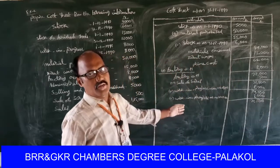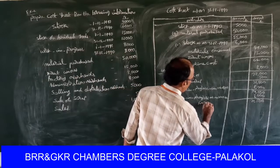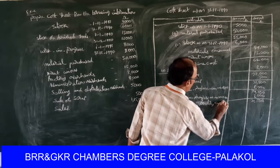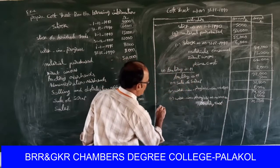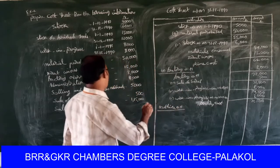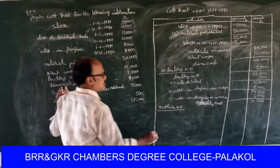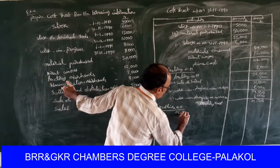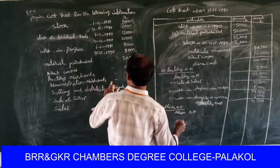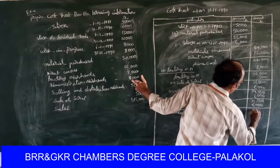This seventy-one thousand five hundred is to be treated as factory cost. Next, office overheads. Administrative overheads is nothing but office overheads. Administrative overheads: six thousand rupees. Total becomes seventy-seven thousand five hundred.